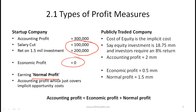Normal profit is the accounting profit which just covers implicit costs. In this case, the normal profit is $300,000 — it is the accounting profit that covers your implicit opportunity costs. Let me go through the other example and then give more detail on the relationships between normal profit, economic profit, and accounting profit.